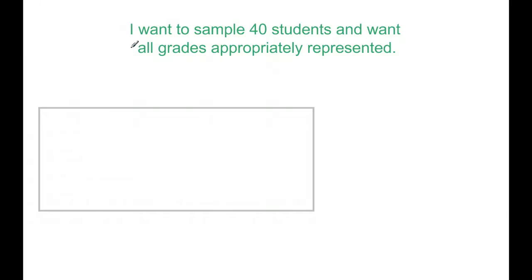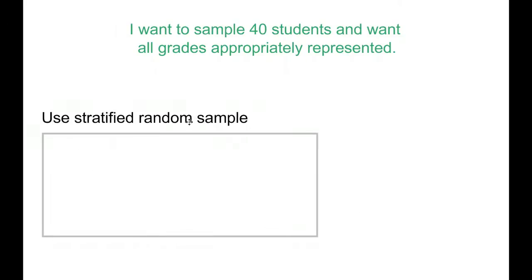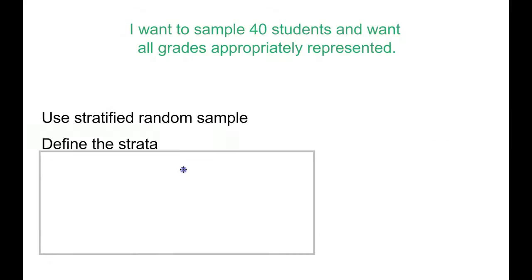If we look at the example of a school real quick, if you want to sample 40 students and you want all grades appropriately represented, here's how you might break it down. First, we decide to use a stratified random sample because we want to make sure that all grades are represented. So if we want to make sure all of these grades are represented, we'll break people down by their grade and then do a random sample from there.